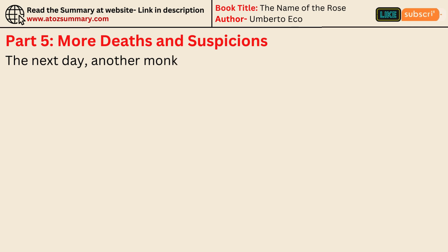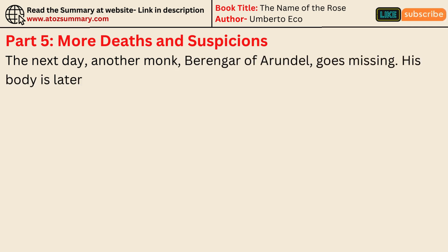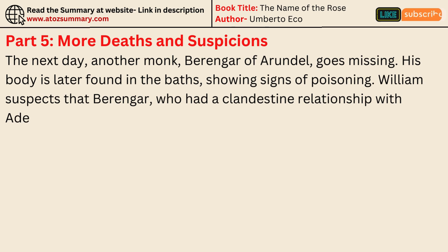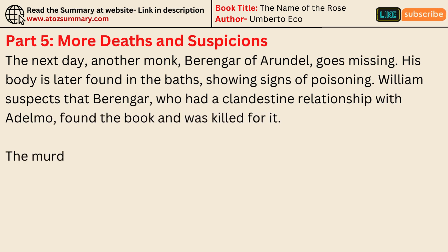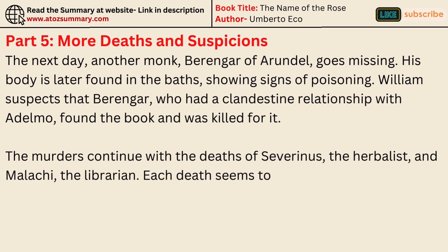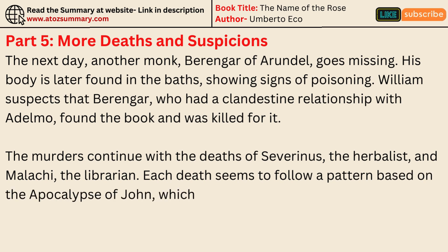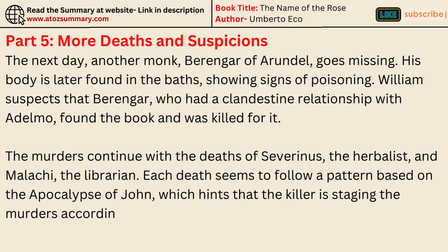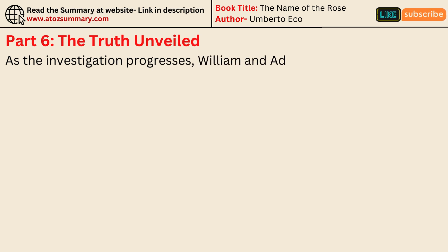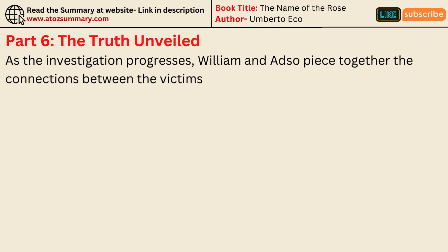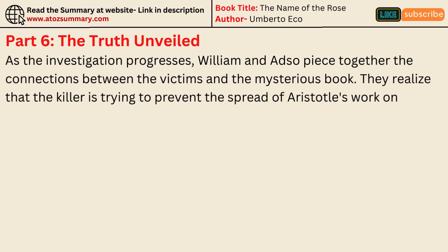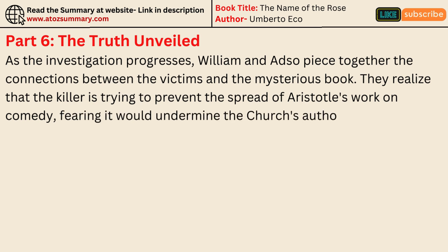The next day, another monk, Berenger of Arundel, goes missing. His body is later found in the baths, showing signs of poisoning. William suspects that Berenger, who had a clandestine relationship with Adelmo, found the book and was killed for it. The murders continue with the deaths of Severinus, the herbalist, and Malachi, the librarian. Each death seems to follow a pattern based on the Apocalypse of John, hinting that the killer is staging the murders according to the Book of Revelation. As the investigation progresses, William and Adso piece together the connections between the victims and the mysterious book, realizing that the killer is trying to prevent the spread of Aristotle's work on comedy, fearing it would undermine the church's authority by promoting laughter and free thought.